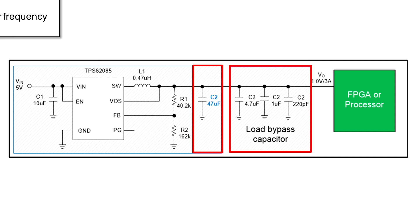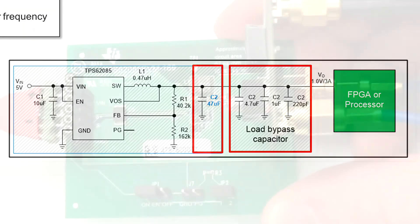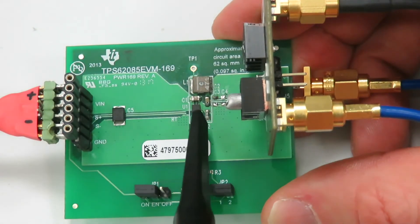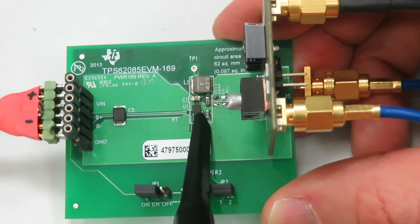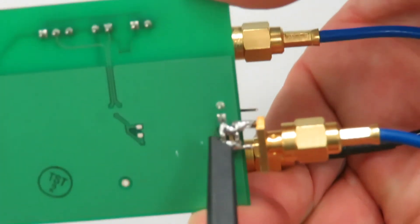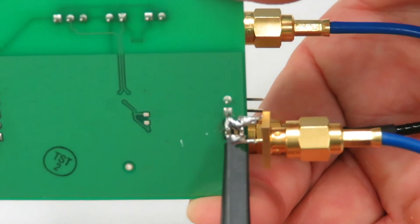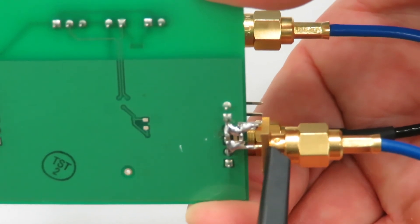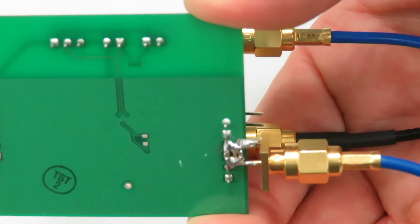Now we can go to the bench and verify if we are able to meet our ±5% window. Here we have our evaluation module where we have placed the 47µF capacitor over here. We measure the load transient with this little test board. And the high frequency output capacitors are soldered directly across the output pins using a coax connector to measure the output voltage response.